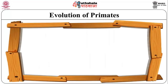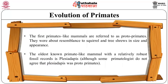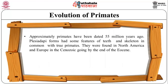The evolution of primates: the first primate-like mammals are referred to as proto-primates. They resembled squirrels and tree shrews in size and appearance. The surviving fossil evidence, mostly from North Africa, is very fragmentary. The oldest known primate-like mammal with a relatively robust fossil record is Plesiadapis, although some primatologists do not agree that Plesiadapis was a proto-primate. Approximately, primates have been dated to 55 million years ago. Plesiadapis forms had some features of teeth and skeleton in common with true primates.